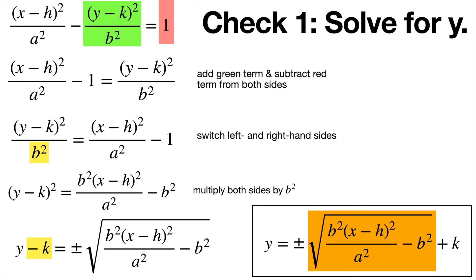So y is equal to a large square root expression plus k. And we're going to analyze this expression, particularly the square root part. And this will be our key to unlocking the behavior of a hyperbola.